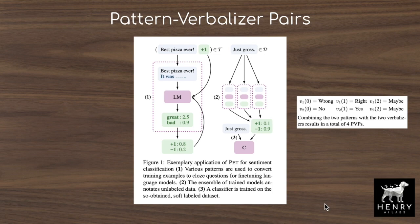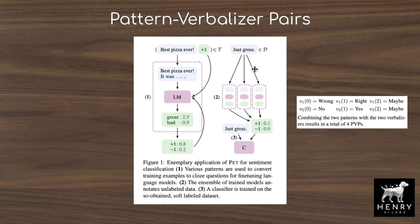The idea is we start off with a pattern. A pattern includes the original sentence — like 'best pizza ever' — and then some manually designed text followed by a mask token. This is used so the language model can label the dataset. With the context 'best pizza ever, it was,' the language model is likely to predict 'great.' Then we have the verbalizer — the mapping from the language model's prediction into labels for the downstream task.